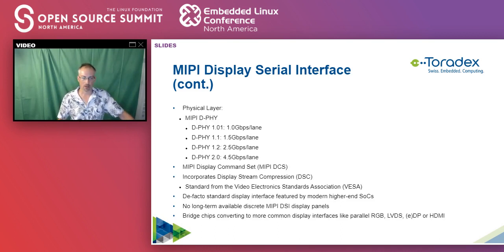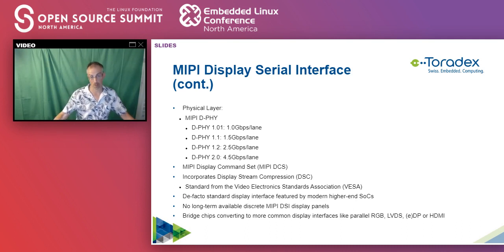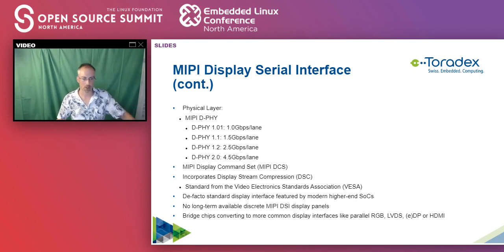Looking at the layers: in the physical layer it uses MIPI D-PHY, with various versions that increase lane speed. It started at one gigabit per second per lane and can now with D-PHY 2.0 go up to four and a half gigabits per second per lane. On the higher layer, you have the MIPI Display Command Set, so-called MIPI DCS, which also incorporates Display Stream Compression (DSC) — a standard from the Video Electronics Standards Association (VESA).